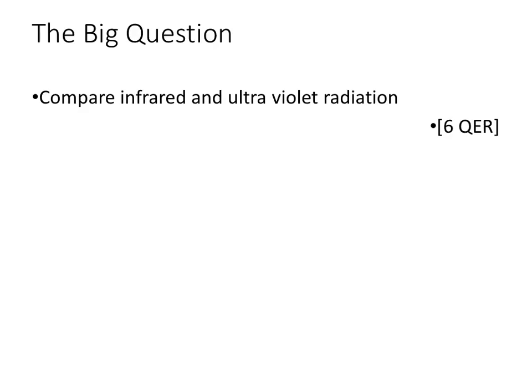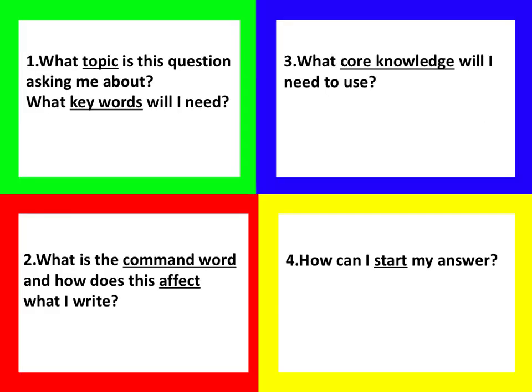Now we're going to compare parts of the electromagnetic spectrum, doing them one at a time. In your booklet you have a boxing-up sheet to fill in. We'll do the first one together, I'll talk you through the next one, you'll write a long answer, and the final one you'll do completely on your own.